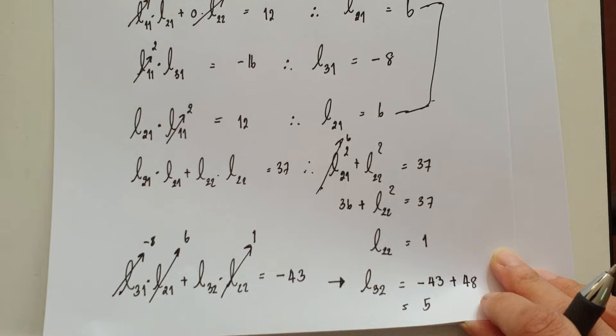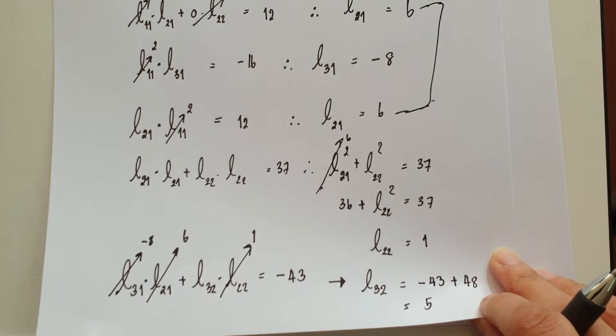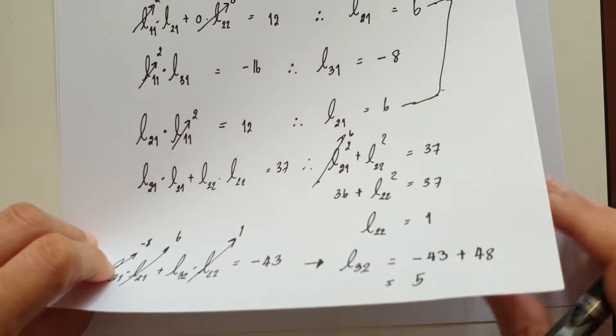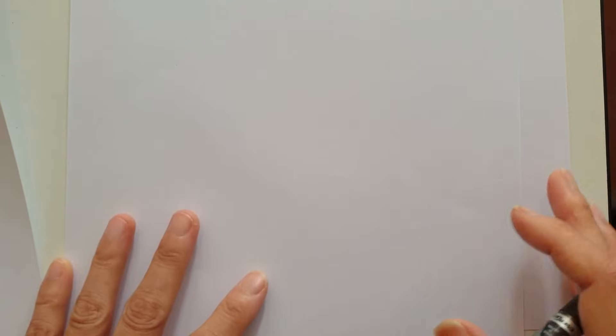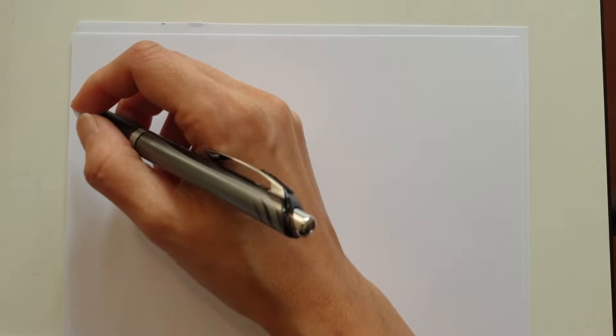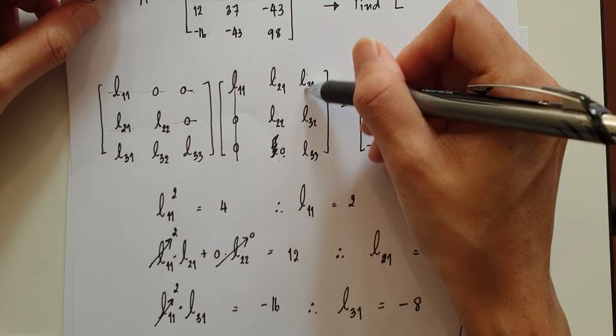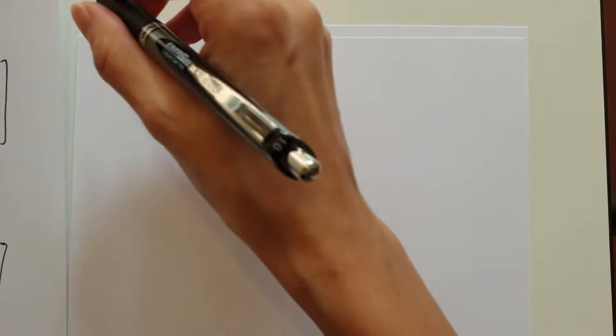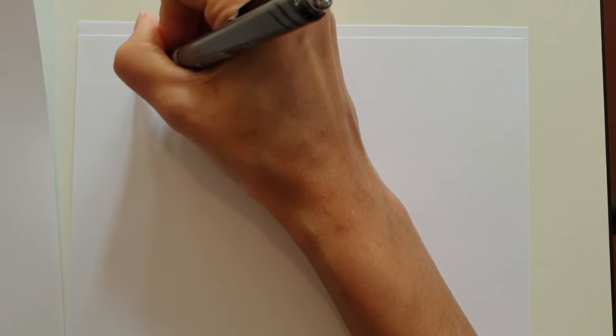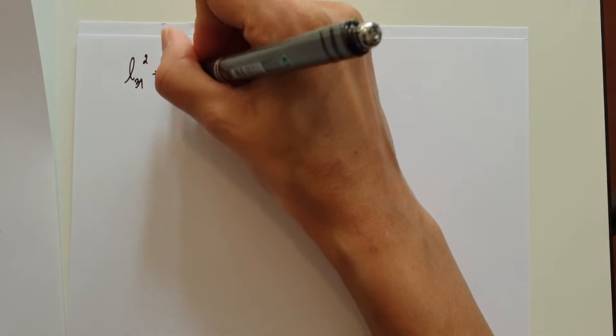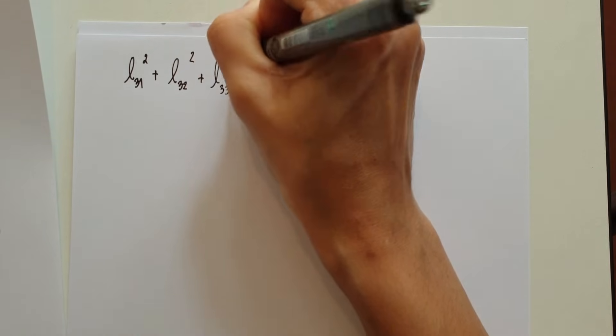We have found almost every element except L33. For L33, we use L31 squared plus L32 squared plus L33 squared equal to 98. That is 64 plus 25 plus L33 squared equals 98, so L33 squared equals 9, and L33 equals 3.